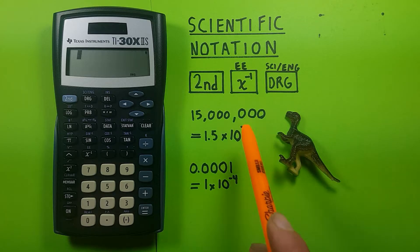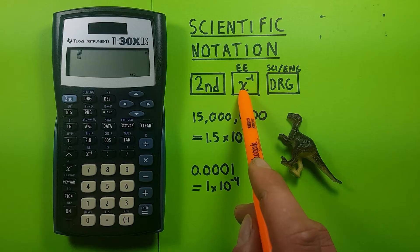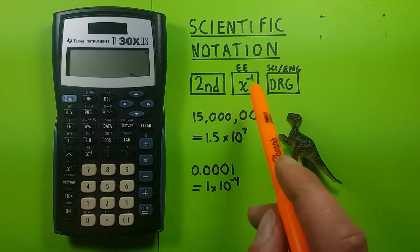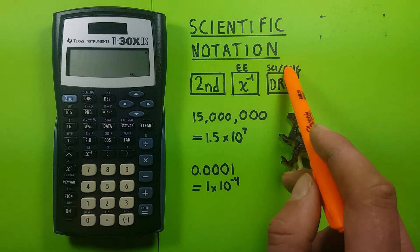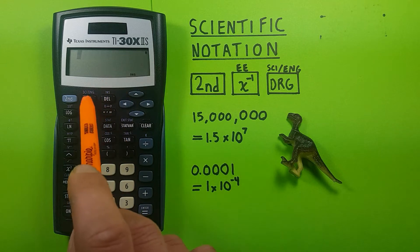To do this we'll be using the second function key located here, the reciprocal key with the EE above it located here, and the DRG key with the psi/ENG key above it located right here.